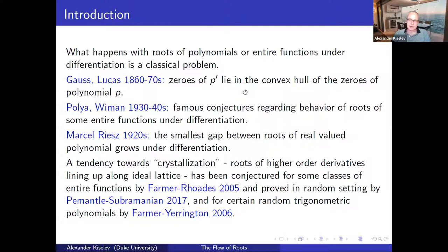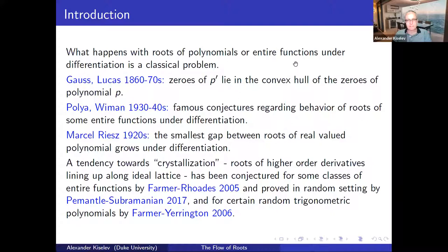Closest to what I'm going to talk about is work by Marcel Riesz in the 1920s. What he showed is that if you take a real polynomial with real-valued coefficients of high degree, the smallest gap between roots tends to grow under differentiation. There is a sort of equilibration — the term used in the area is crystallization — where roots of high-order derivatives align along an ideal lattice after some number of differentiations. This has been conjectured for some classes of entire functions, and proved for some random classes by Montell, Subramanian, and certain random polynomials.